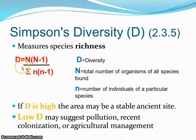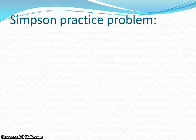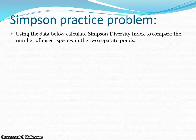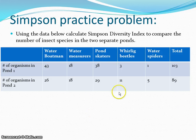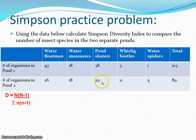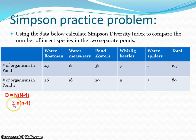We're going to do a practice problem comparing the number of insect species and their diversity in two ponds. I have pond one going across in one row and pond two going across in another row, with each column being a different species type and the total number of organisms at the very end. Remember, I'm calculating D diversity. The big N is going to be my total numbers, and I use the different individual species as little n. The sigma symbol means sum of all, and I'll have to do this calculation once for each pond and then compare the D values.